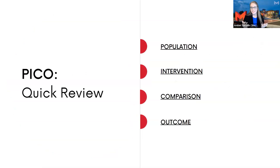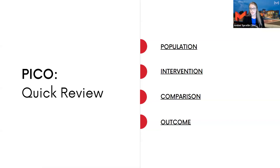You should be pretty familiar with the PICO question at this point, but just in case: a PICO question contains a population, an intervention, a comparison to that intervention, and an outcome. When you're searching in Discovery or in the nursing databases, your search string is going to contain most, if not all, of these aspects.